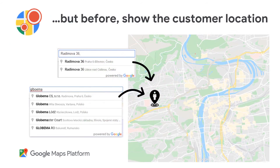Before you can find the nearest store and calculate the distance, you need to know your customer's location. The best way is to use Google Autocomplete Search from the Places API and Geocoding API. Autocomplete Search returns a list of addresses based on a user's location or search string, and it helps to reduce keystrokes.